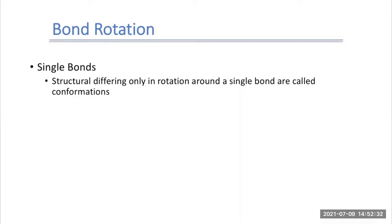When we look at single bonds and single bond isomers, those tend to focus on bond rotation. When we have a bond rotation, our atoms can spin and rotate around their bonds, usually without much impediment. So when we have a single bond, any structural difference is only in the rotation around that single bond. These are what we call conformers or different conformations.